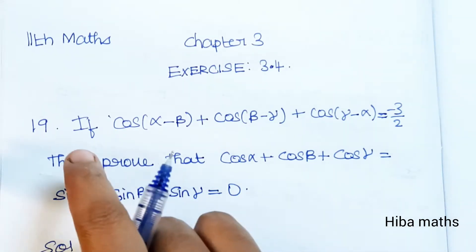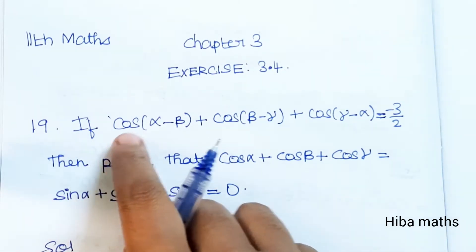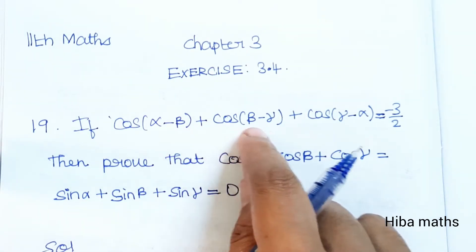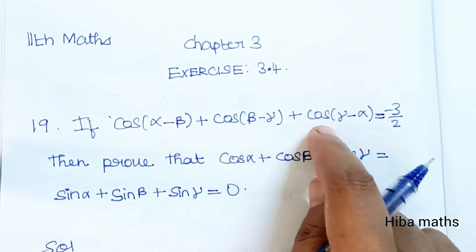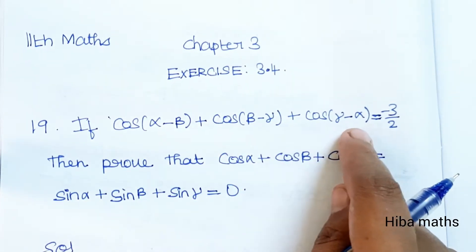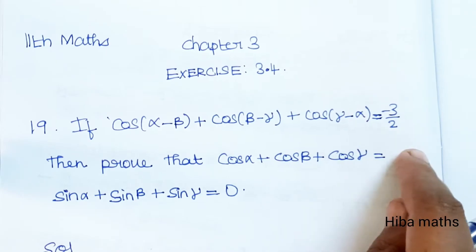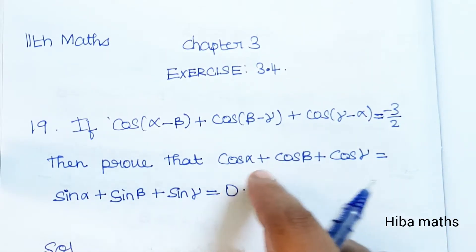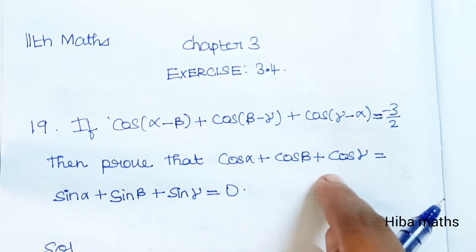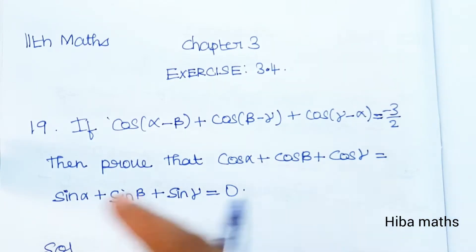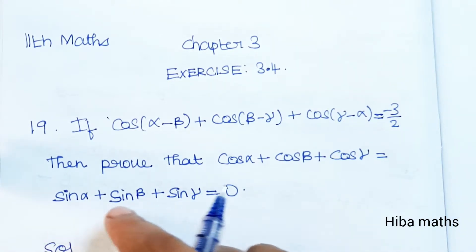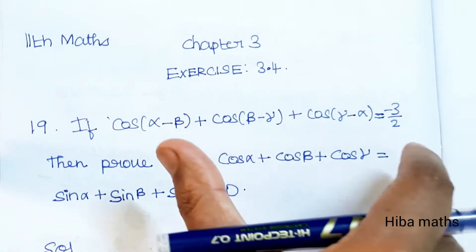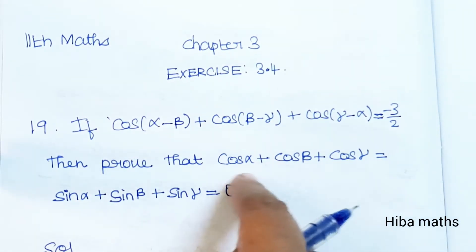19th question: if cos(α - β) + cos(β - γ) + cos(γ - α) is equal to -3/2, then prove that cos α + cos β + cos γ is equal to sin α + sin β + sin γ is equal to 0.